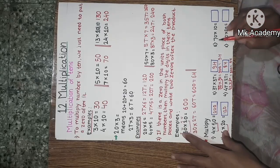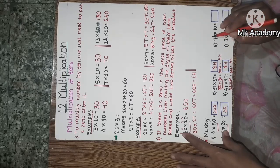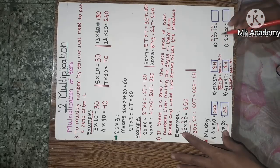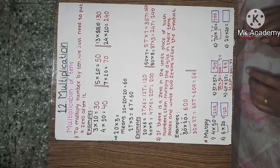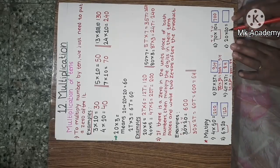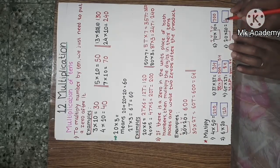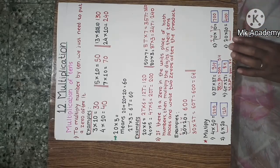Next example: 70 into 10. We multiply the tens places: 7 into 1 is 7, then write two 0s — so 70 into 10 is equal to 700. Now 20 into 20: we multiply the tens places — 2 into 2 is 4 — then put two 0s. We get the answer 400. So 20 into 20 is equal to 400.